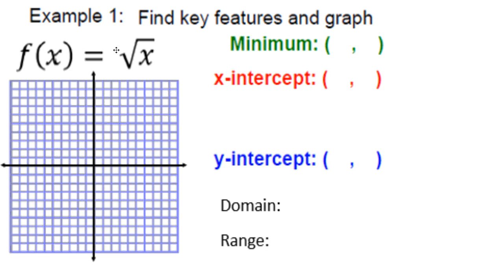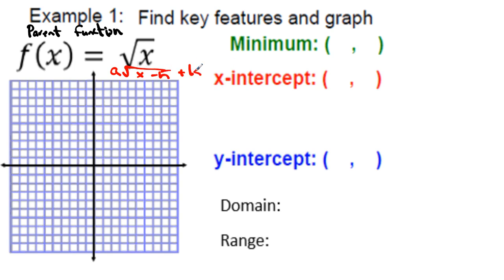Example 1: find the key features and graph. This is our parent function — the basic form for all square roots, which is just the square root of x. To find the vertex, write the standard form: a times the square root of x minus h plus k. There's no h and no k value, so both are zero. Our minimum and vertex is (0, 0).